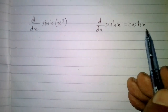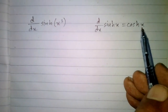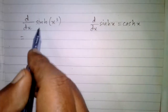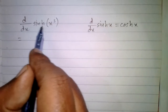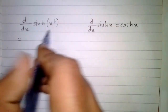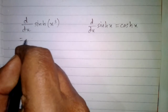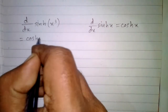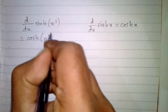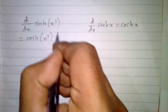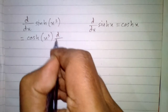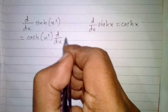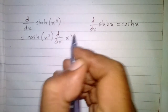So we will put x cube in place of this x. The derivative of hyperbolic sine of x cube is hyperbolic cos of x cube, multiplied by the derivative of the inside, which is x cube.